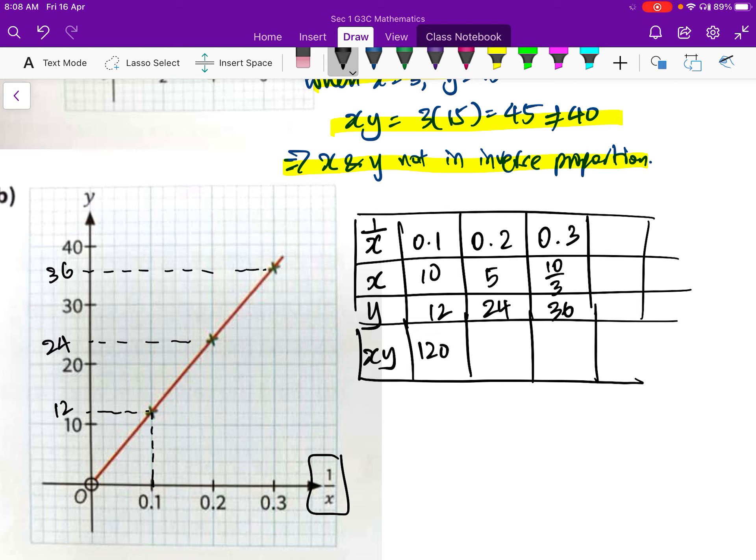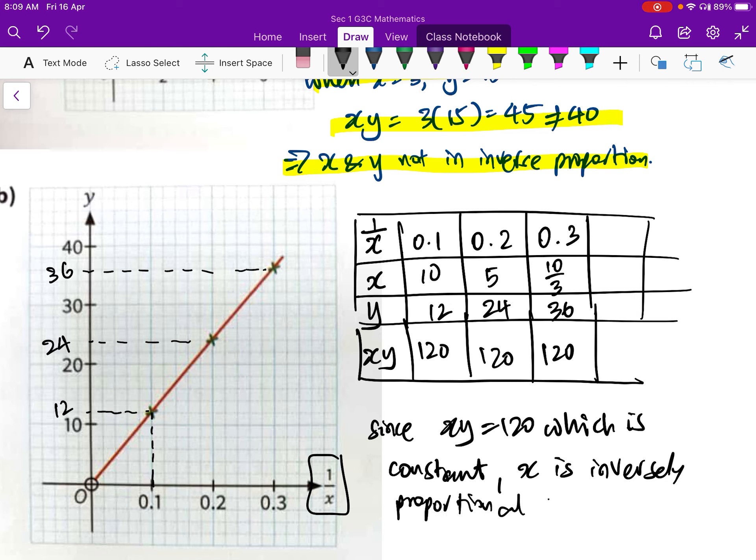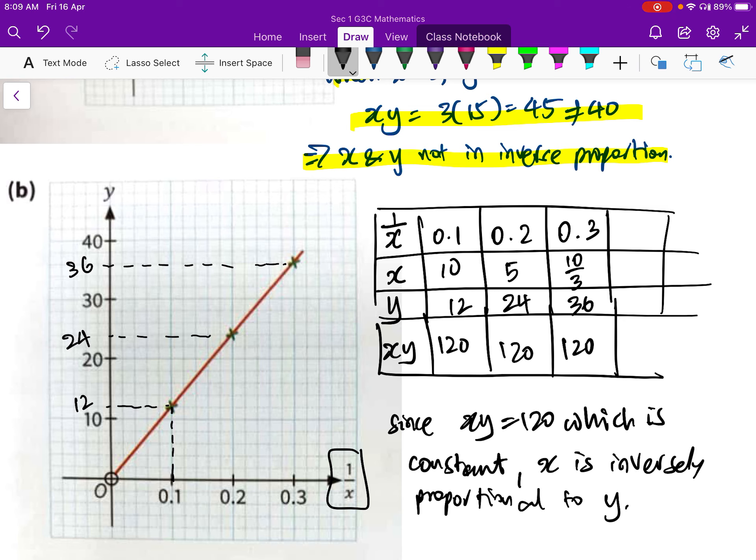Then now we include the Y values. When X is equal to 10, that is when 1 over X is equal to 0.1, our Y value is 12. And then 24. And 36. And we are trying to find the XY value. So this gives us 120, 120 also, and 120 also. So we see that since XY equal to 120, which is a constant, then X and Y are inversely proportional, although this is a straight line.